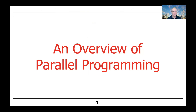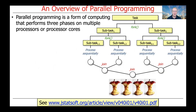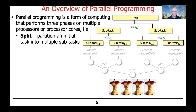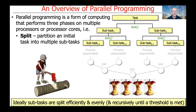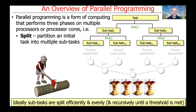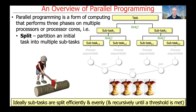So what is parallel programming? Parallel programming is a form of computing that performs three phases on multiple processors or multiple processor cores. The first phase is the split phase, which involves partitioning an initial task into multiple subtasks. Ideally, these subtasks are split efficiently and evenly, and they're also typically split recursively until some threshold is met, at which point no further partitioning takes place.